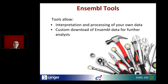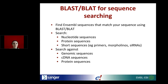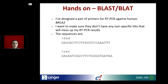We're going to start with BLAST and BLAT sequence searching. Most people are familiar with BLAST; BLAT is a BLAST-like alignment tool, very similar. They allow you to find Ensembl sequences that match your sequences. You can search nucleotide sequences, protein sequences, and short sequences. We have special settings for primers, morpholinos, and siRNAs, which need slightly different algorithm parameters. You can search against genomic sequence, cDNA sequence, or protein sequence.